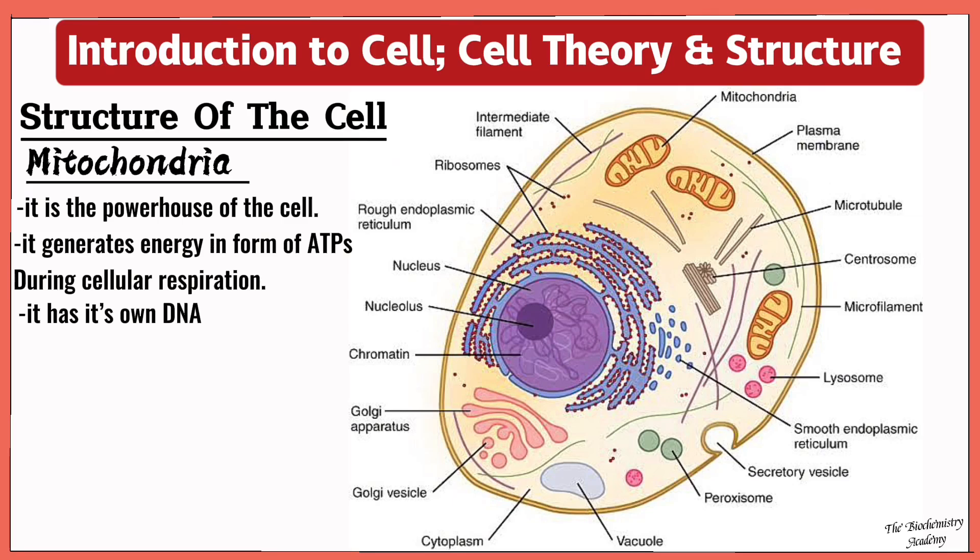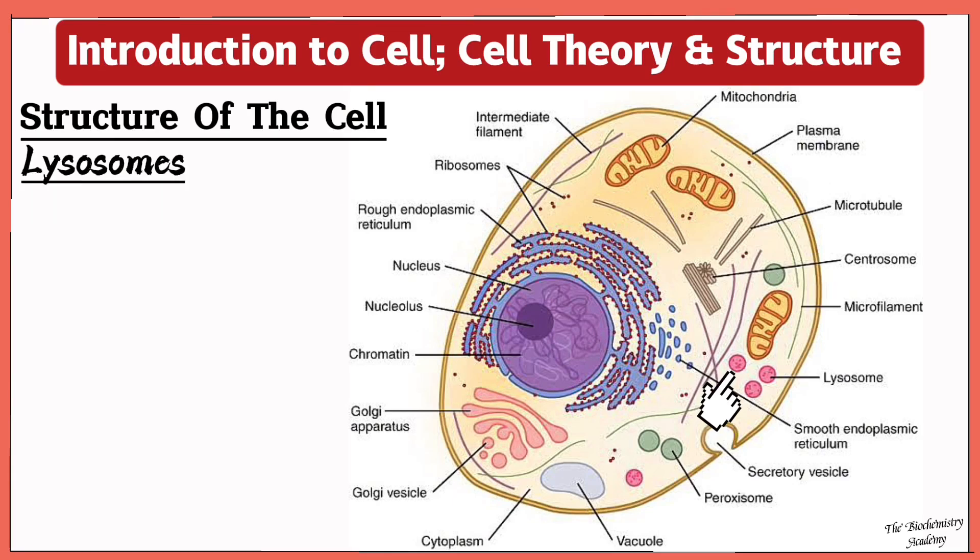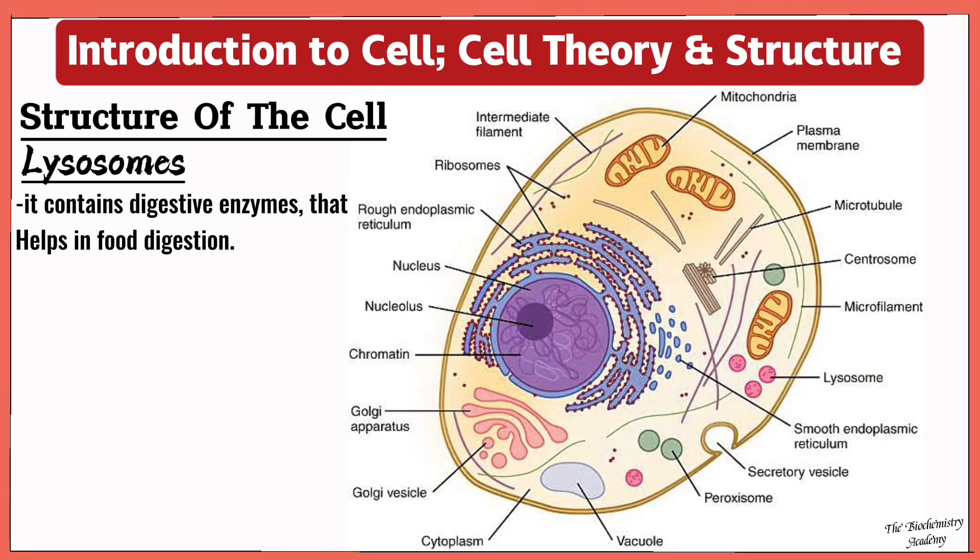Next we'll talk about the lysosome. The lysosome contains digestive enzymes which help in the digestion of food, breaking down the food. And in the white blood cells, these lysosomes destroy pathogens which might be harmful to the cell.